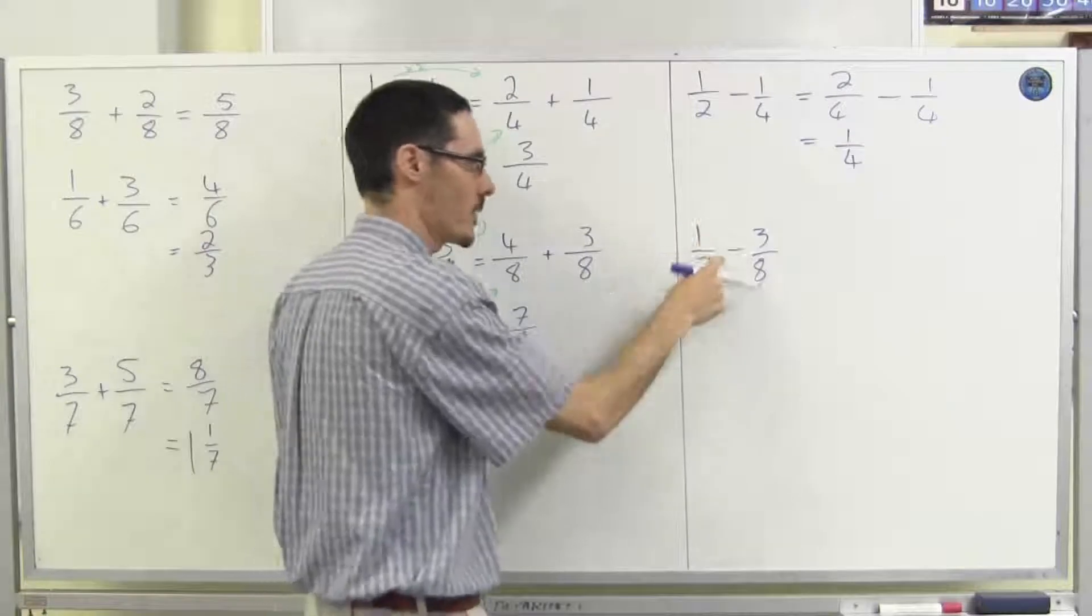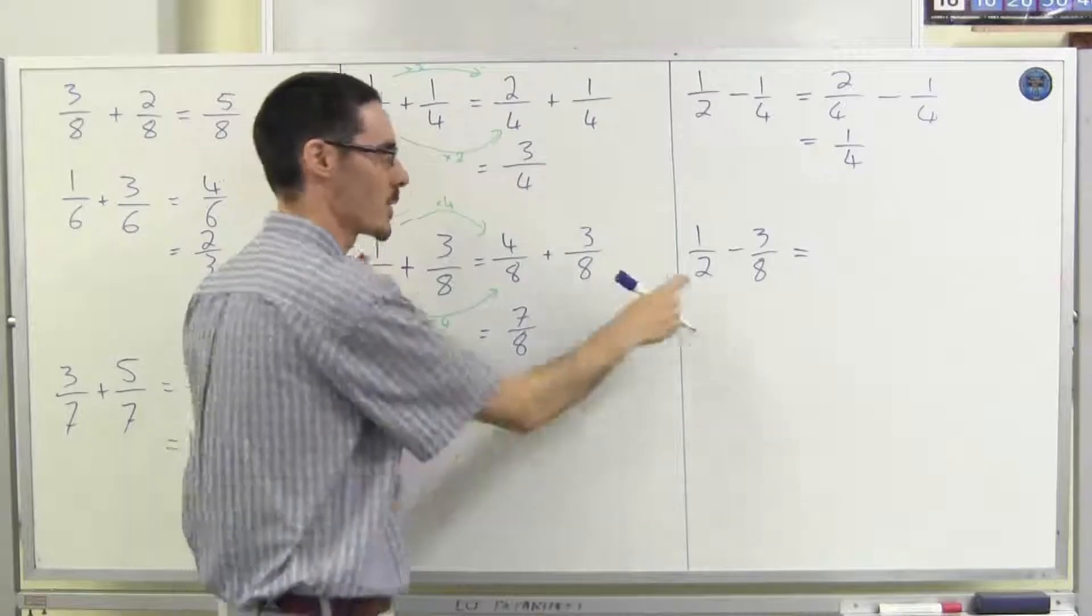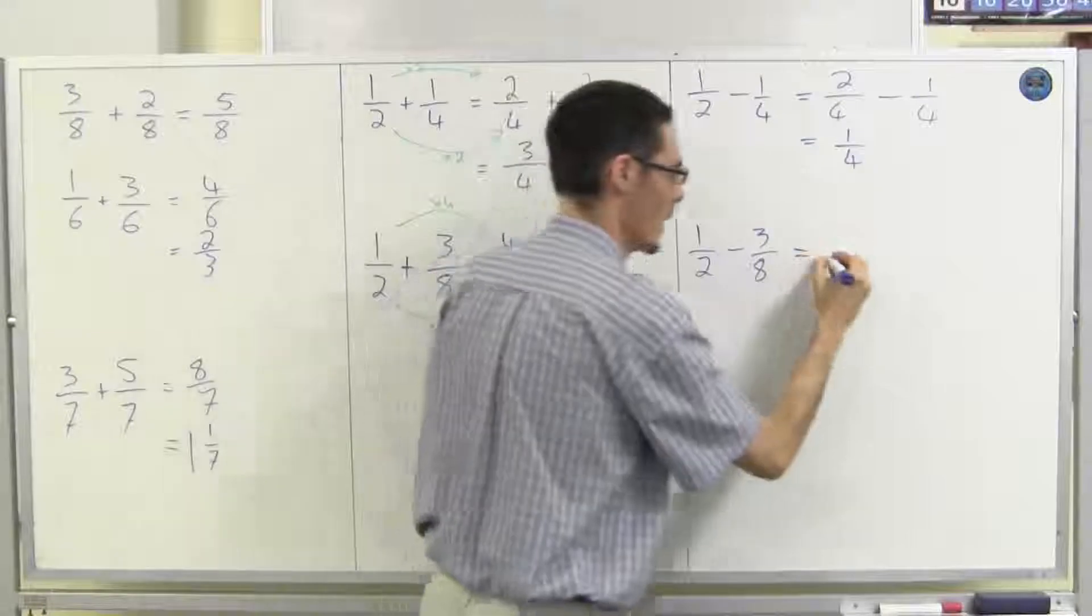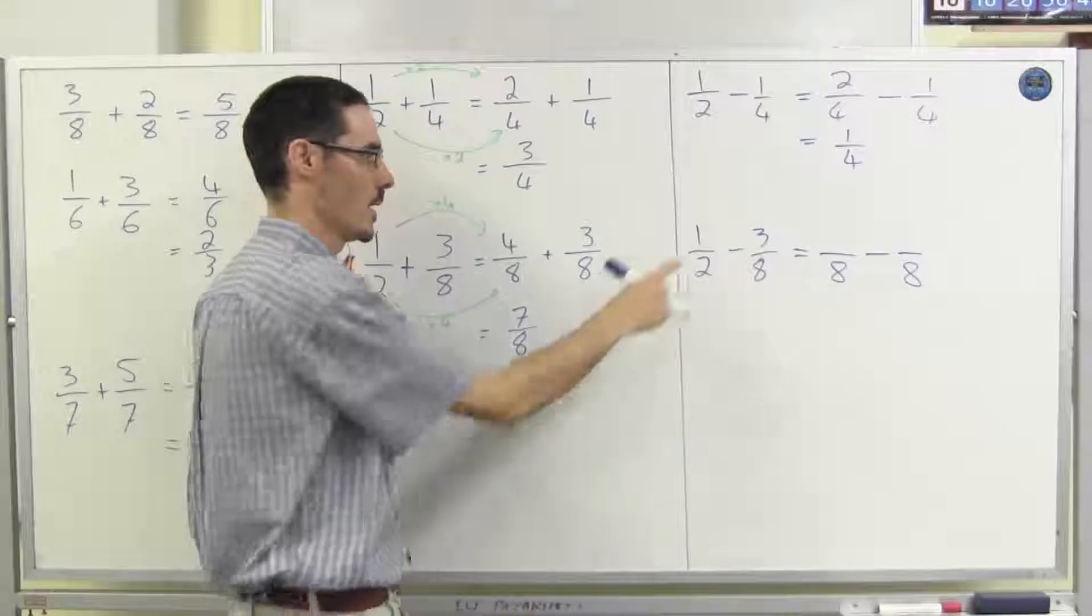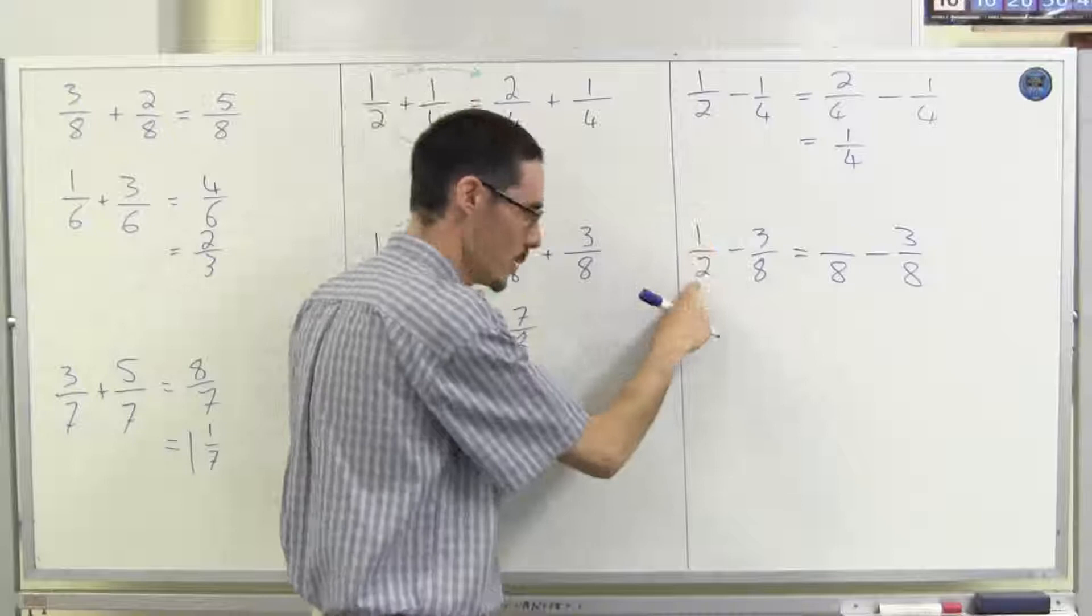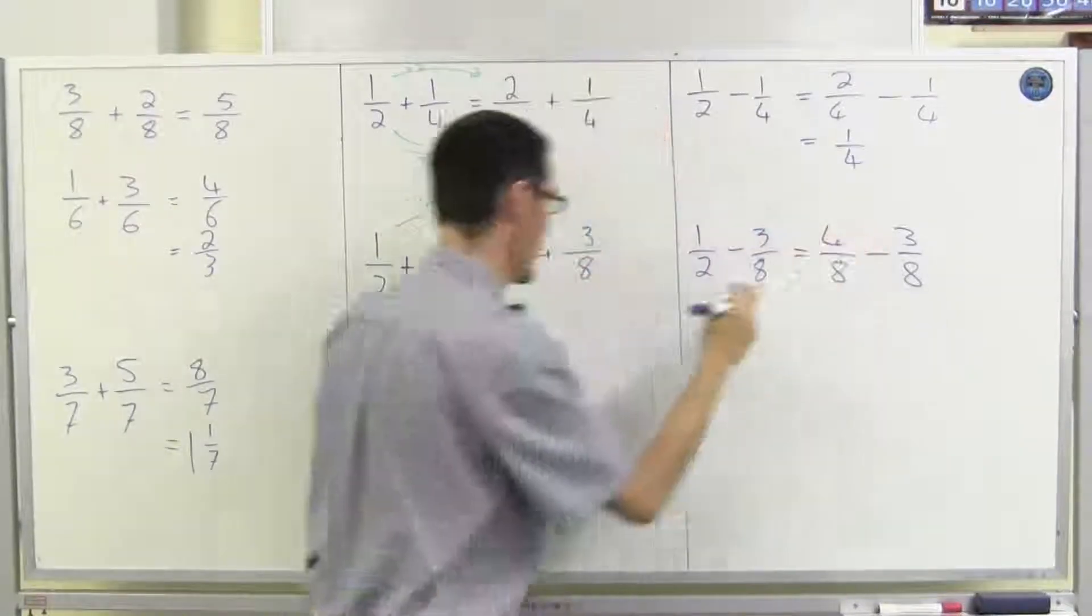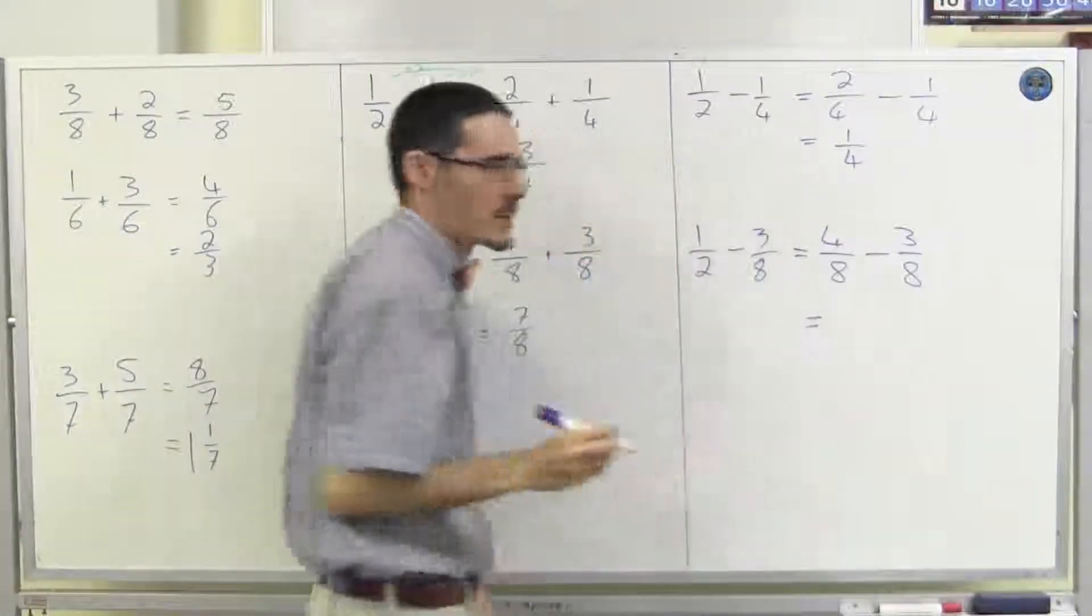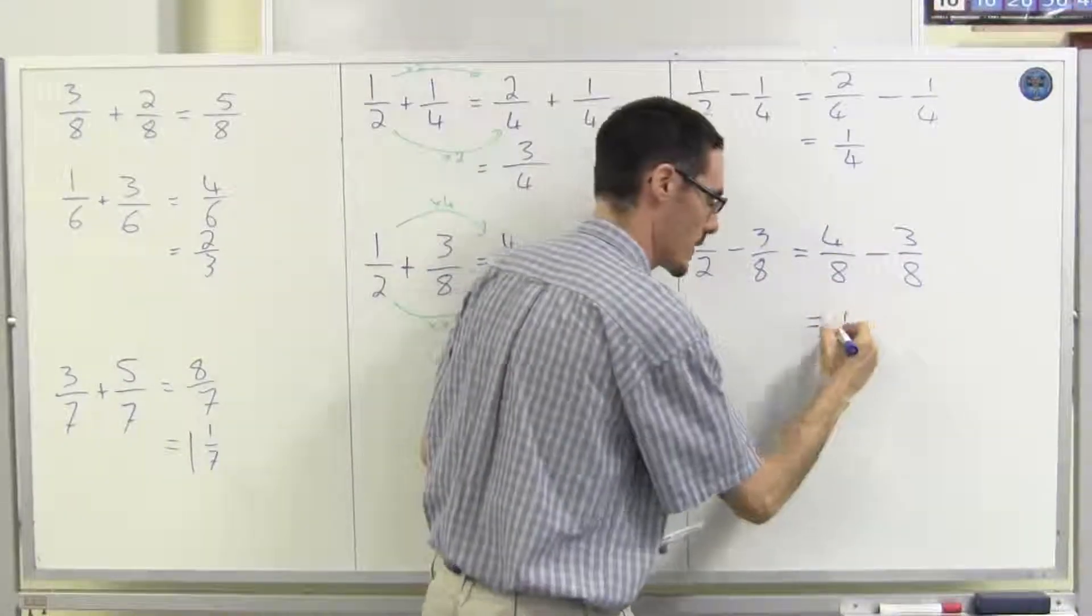All right, a half minus three eighths. Well, I need a number that both two and eight go into. The smallest number that works is eight. We worked that out before. So I write both fractions as something out of eight. This one already is. And then one, sorry, two multiplied by four gives me eight, so it's one times four gives me four. Again, it should be the same as I had last time. Okay, now I've just got an eighth and an eighth, so let's just subtract them. Four eighths minus three eighths. Four take three is one eighth.